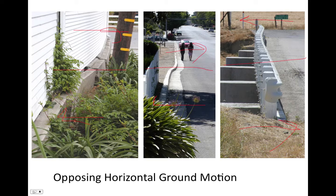A transform plate boundary shown by the black line runs through California. Where will Los Angeles be in the future? Will LA break off? Will LA move north? Will it move south? Will it move inland? We can see that LA is part of the Pacific Plate, and the Pacific Plate is moving alongside the North American Plate along this transform plate boundary. The Pacific Plate is moving north relative to the North American Plate. So we can expect Los Angeles to move north with this plate — in fact, LA will move north, and over time it will be closer and closer to San Francisco.